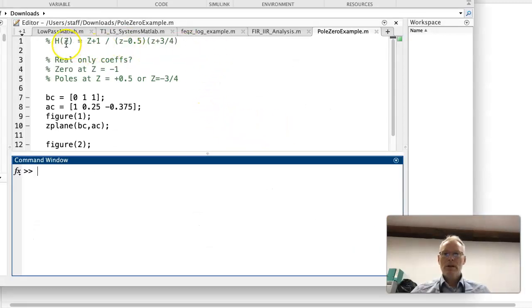So what I've done here is I've expressed our original transfer function: Z plus one divided by Z minus a half multiplied by Z plus three quarters. The coefficients we derived as zero, one, one, and one, 0.25, minus 0.375, which is the minus three eighths.